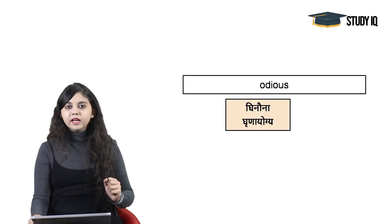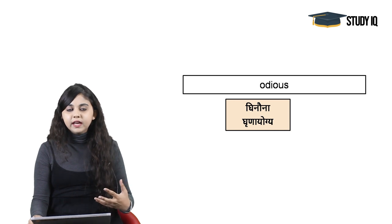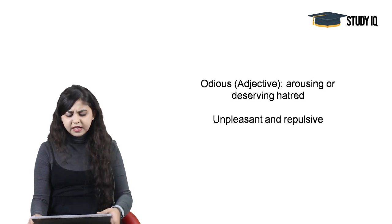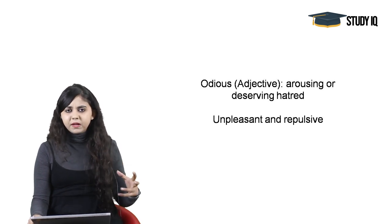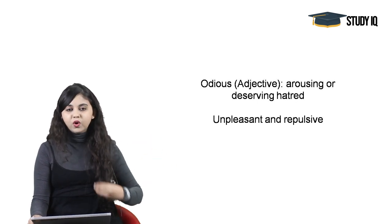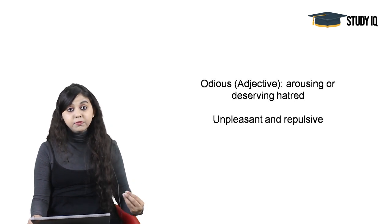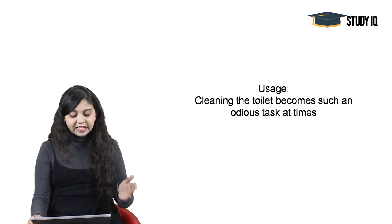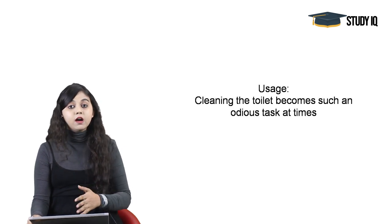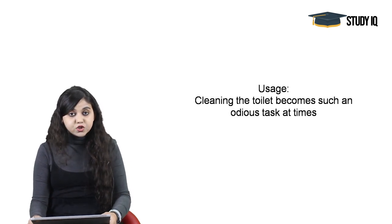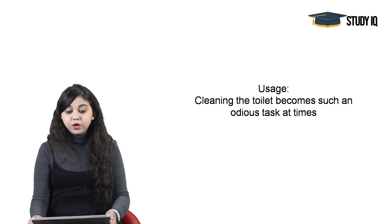Moving on to the next word: Odious. Odious ka arth hota hai aisi cheez jo ghinoni hai, ghrina aapke andar utpann karti hai. Something that is disparaging, has a foul smell, that is unpleasant and repulsive — that is when we use the adjective odious. It means something arousing or deserving hatred, something unpleasant or repulsive. Usage: Cleaning the toilet becomes such an odious task at times — bilkul repulsive act hai, ghrina utpann kar deta hai.